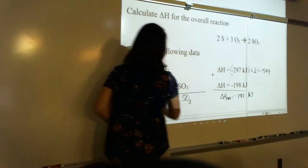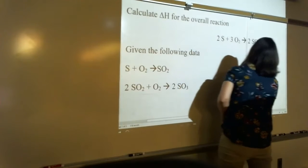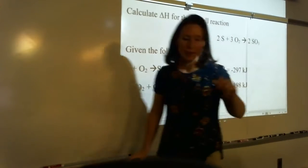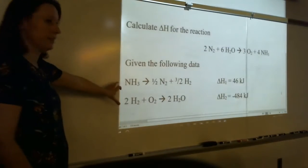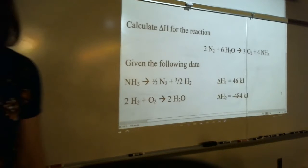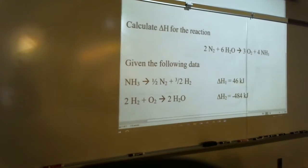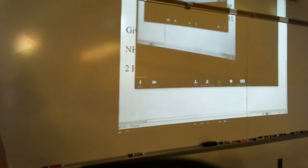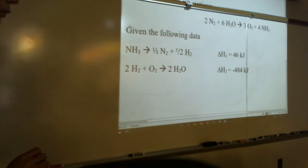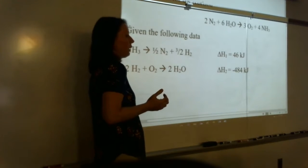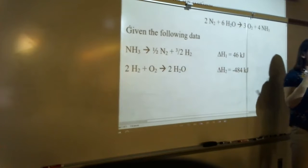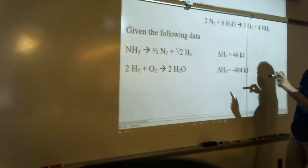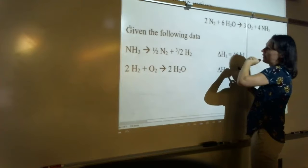Seeing an easy one should give you the hang of it. For the second problem on the handout, calculate delta H for the given reaction. The approach: look at your desired equation, look at what you've got to work with, and decide — is something on the reactant side or product side, and do the coefficients match? We want N₂ to be a reactant, so find the reaction containing N₂.